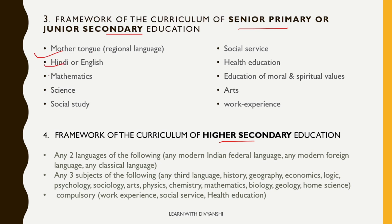At the senior primary and junior secondary level, the curriculum should include: mother tongue (regional language), second language (Hindi or English), mathematics, science, social studies, social service, health education, education of moral and spiritual values, arts, and work experience. At the higher secondary level, any two languages from the following should be chosen: any modern Indian federal language, any modern foreign language, or any classical language.